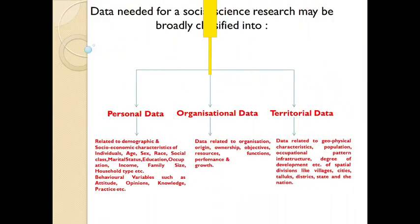Data needed for social science research may be broadly classified into three types. The first type is data related to demographic and socio-economic characteristics of individuals such as age, sex, race, social class, marital status, education, occupation, income, family size, and household type.